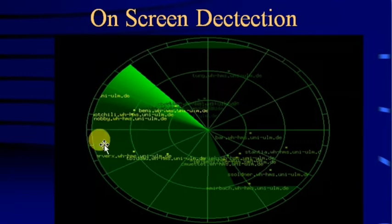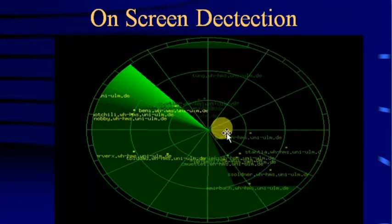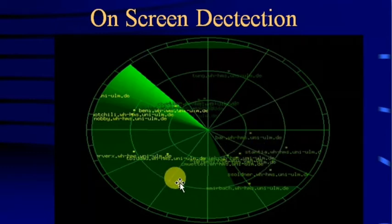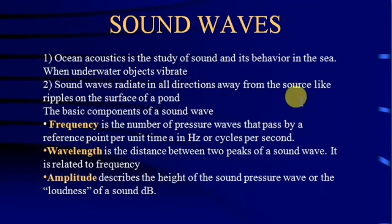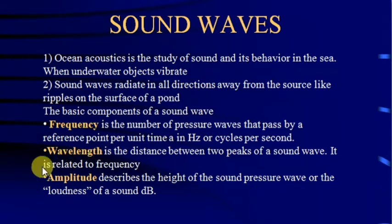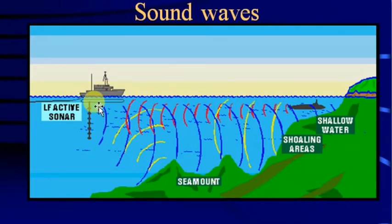A typical sonar display screen shows dots representing detected objects, along with information about their position, range, and direction of movement. The main component is sound waves. Ocean acoustics is the study of sound waves underwater. Sound waves radiate in all directions from a source. Key components include frequency (cycles per second, in Hertz), wavelength (distance between two peaks), and amplitude (height of the sound pressure wave, or loudness in decibels).